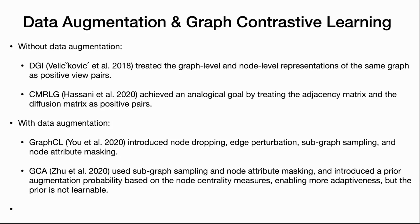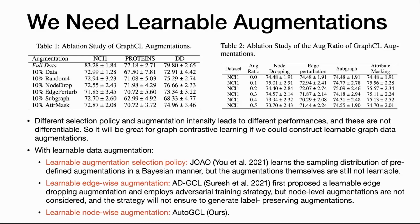With data augmentation, the most representative work is GraphCL, which introduced various graph data augmentations like node dropping, edge perturbation, subgraph sampling, and node attribute masking. There is also GCA, which used subgraph sampling and attribute masking and introduced a prior augmentation probability based on node centrality measures, making it more adaptive to different tasks. But the prior is not learnable. This ablation study of GraphCL's augmentations with different selection policies and augmentation ratios shows that different combinations and ratios really matter to the final result.